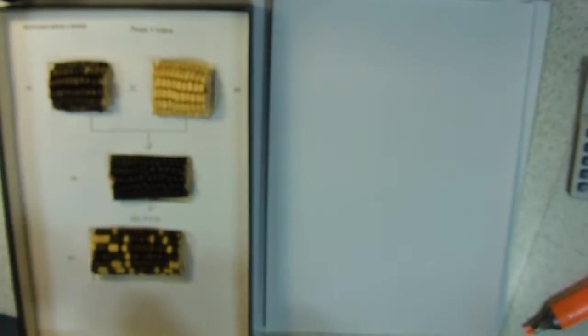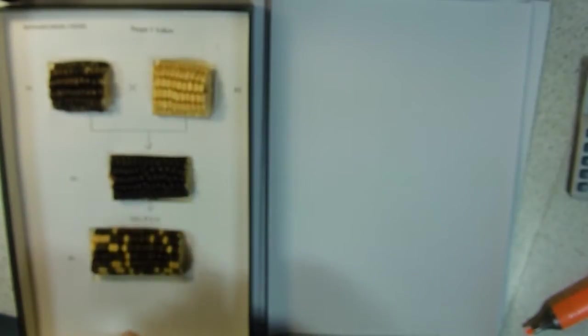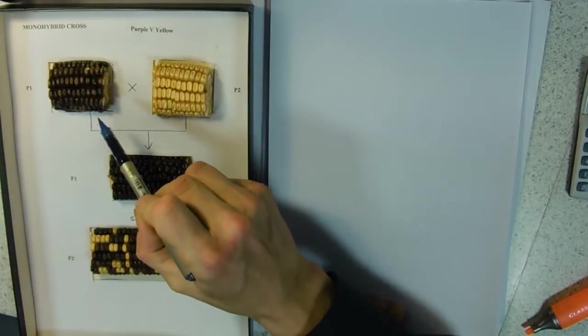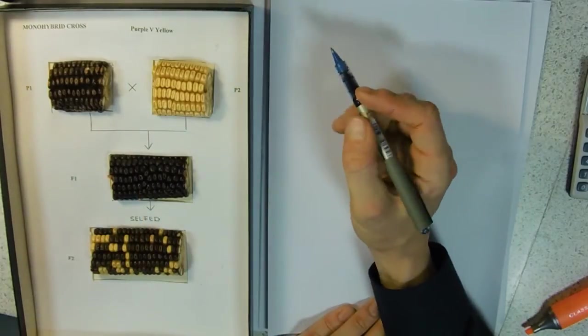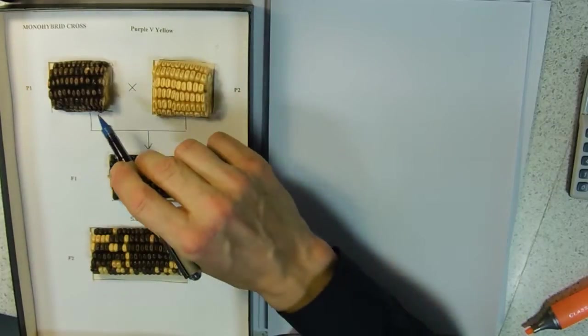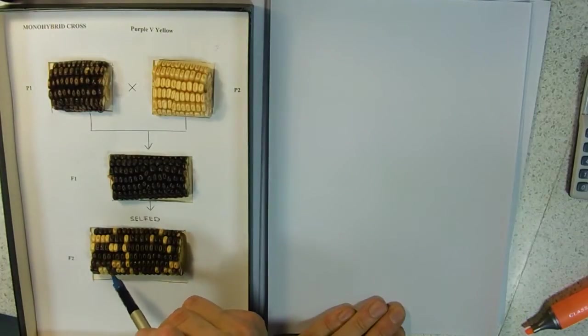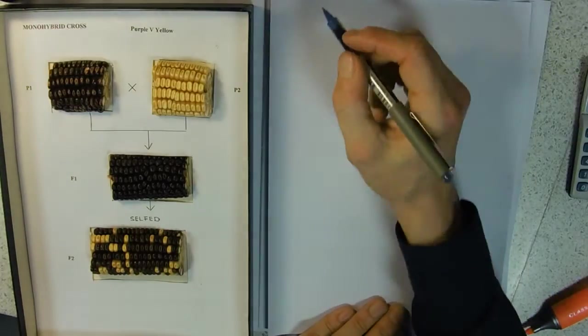We're looking at a chi-squared test for a monohybrid cross using corn cobs. These are great to use because each individual corn kernel is the result of an individual fertilization, so they show what the new plants are going to be.